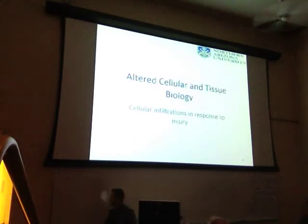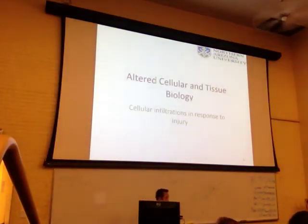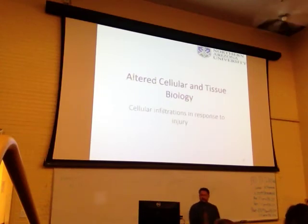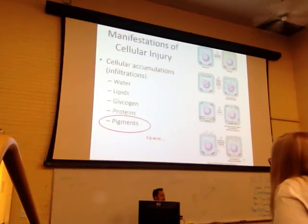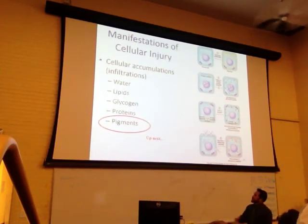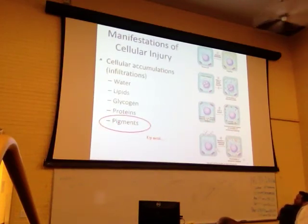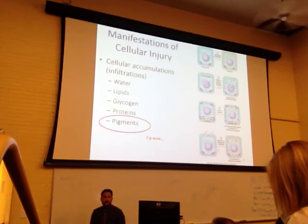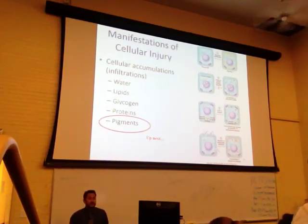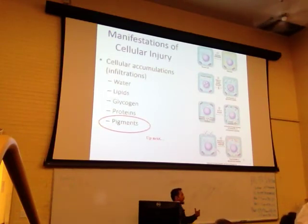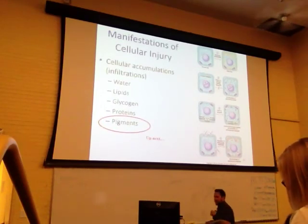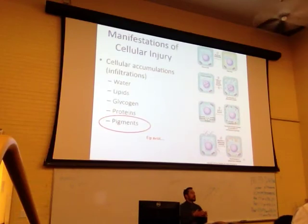In the last segment, let's look at cellular infiltrations as the cell responds to injury. We've talked about manifestations involving water, lipid changes, glycogen decreasing, proteins becoming denatured and non-functional, and calcium coming in to activate enzymes that chew up everything. The last thing we need to talk about are pigments. In pathology, a lot of pigmentation gives us clues about what's happening in the tissue.